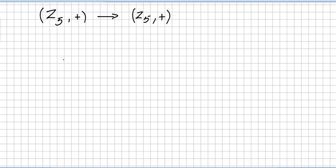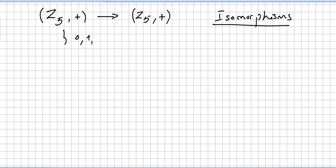This video covers answers to questions about isomorphisms. The first question is: describe all group isomorphisms from Z5 — the integers 0, 1, 2, 3, 4 under addition.